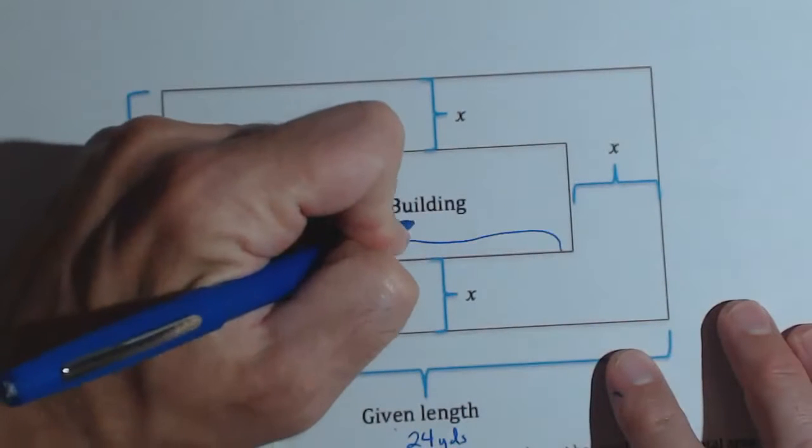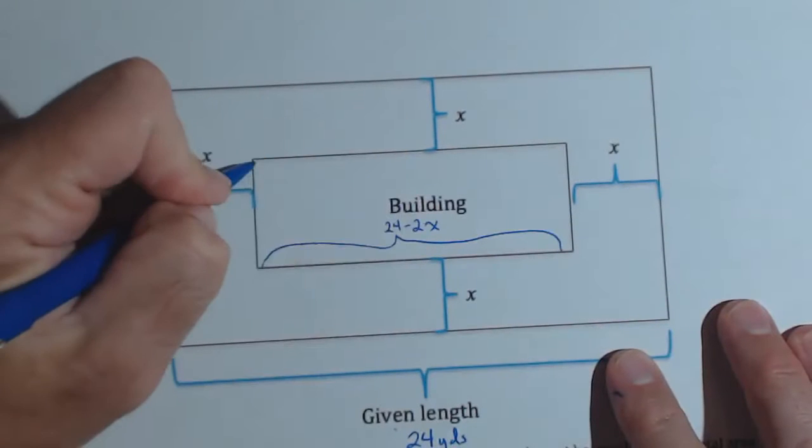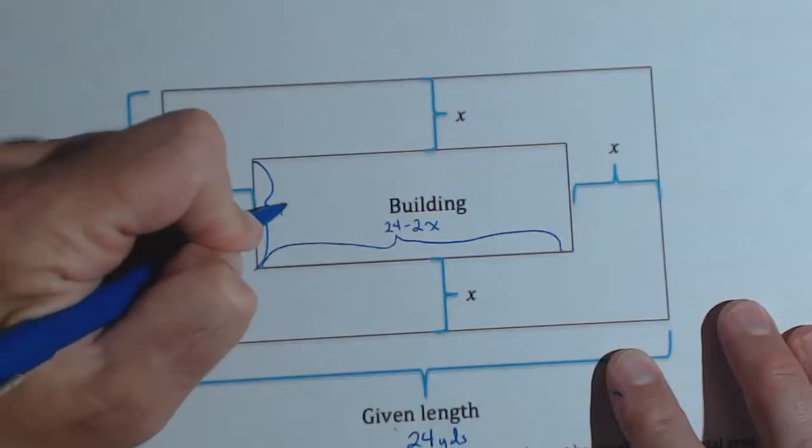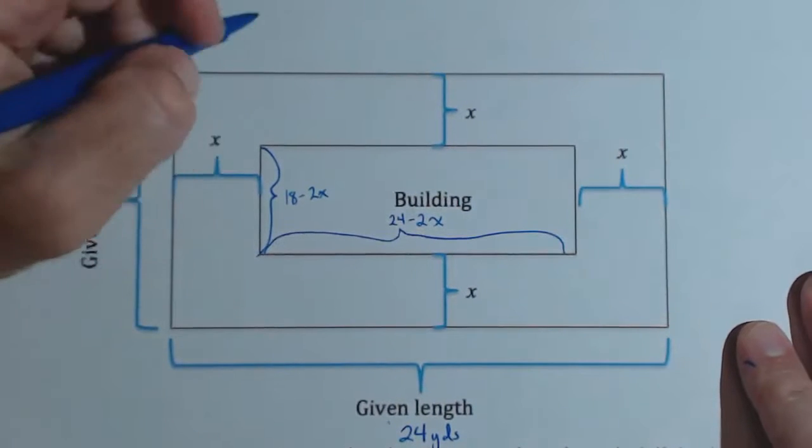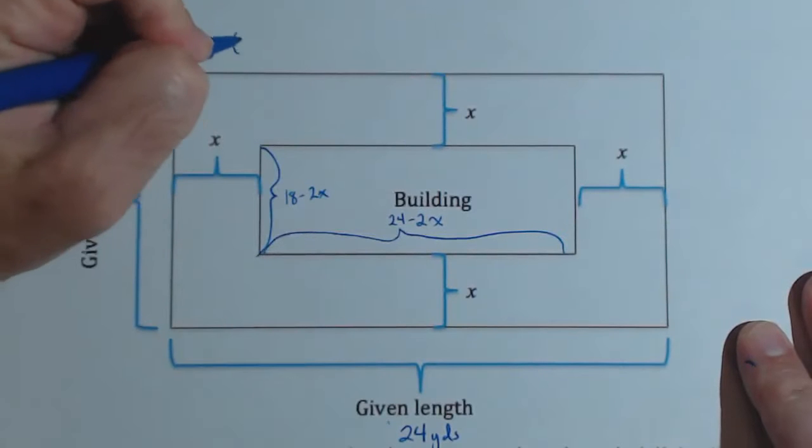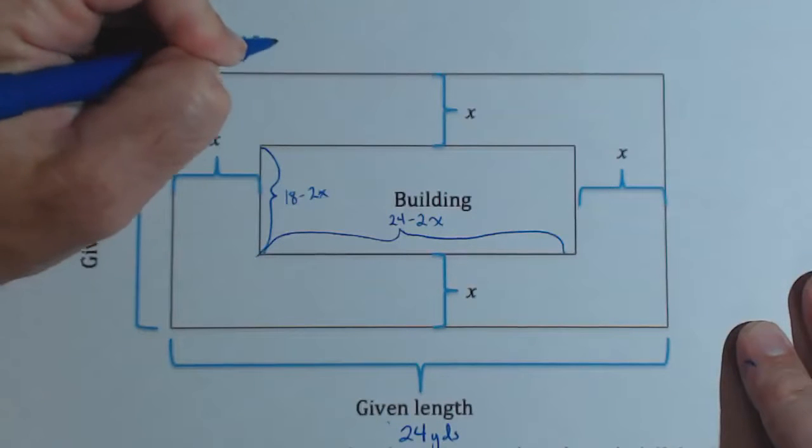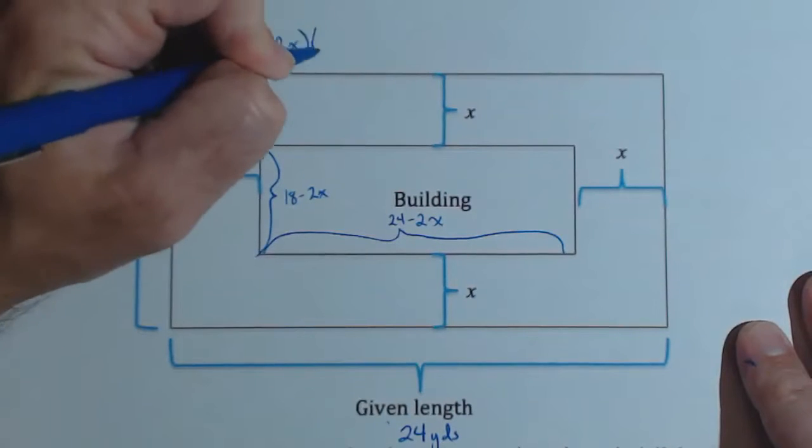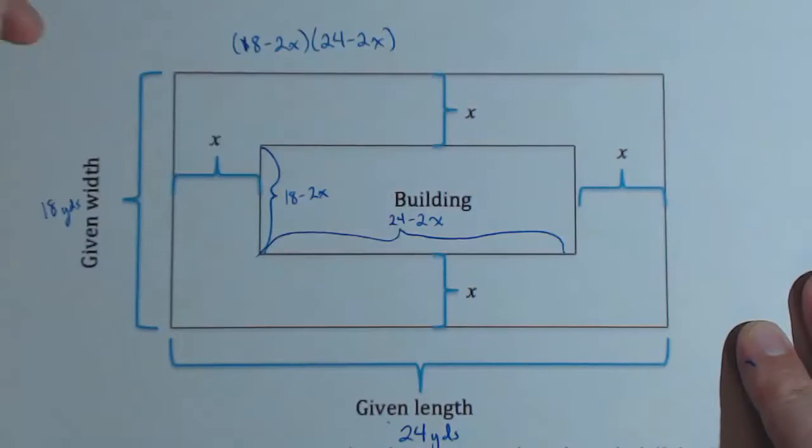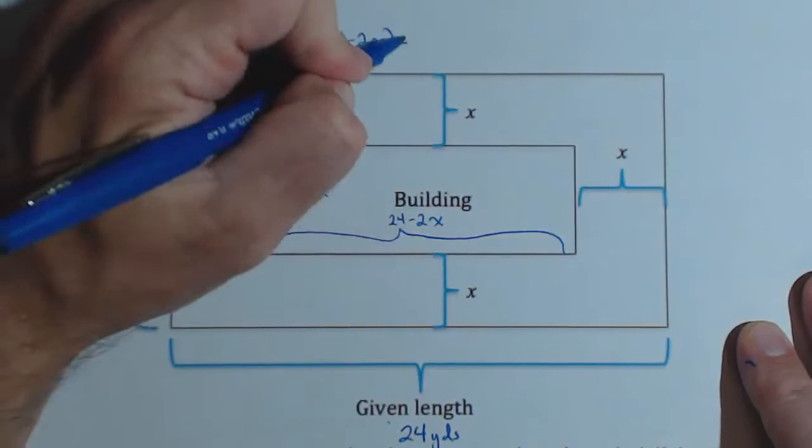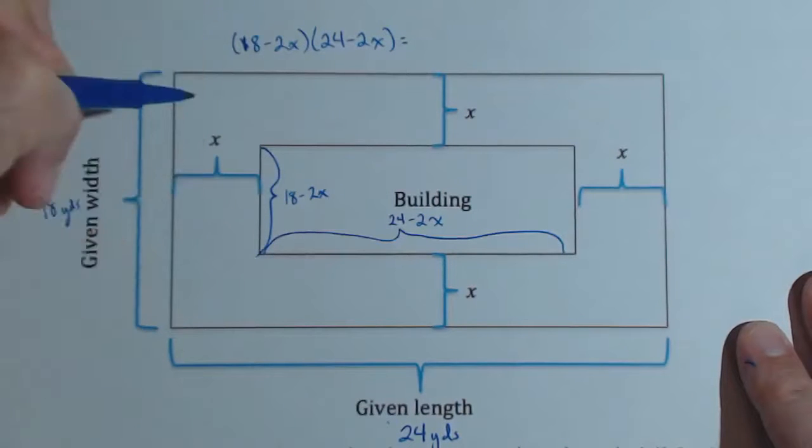Real similar, this is going to be 18 minus 2X. So the area of the building in terms of X is going to be 18 minus 2X times 24 minus 2X equals that area that we mentioned, half of the total area. So one half times the 18 times the 24.